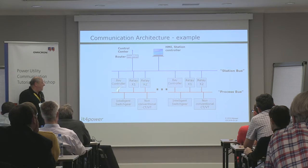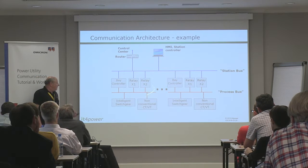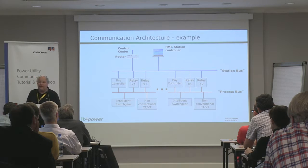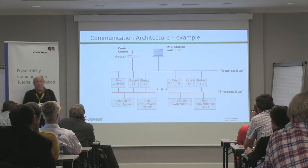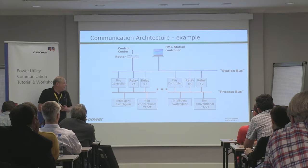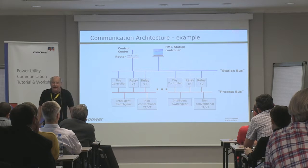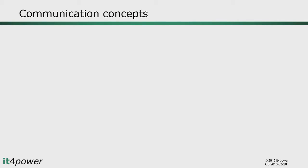New with 61850 was the addition of a process bus — a digital interface going further down into the process, enabling intelligent switchgear to support a communication interface directly. It supports non-conventional CT/VTs but also conventional CTs with standalone merging units, so that analog-to-digital conversion happens down in the switchyard. In this picture the station bus and process bus are shown as two independent networks, but 61850 is open on that — it allows all kinds of communication network topologies.